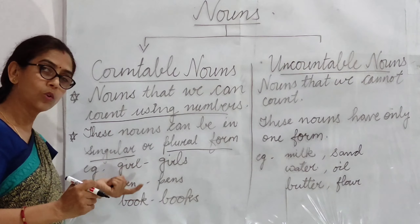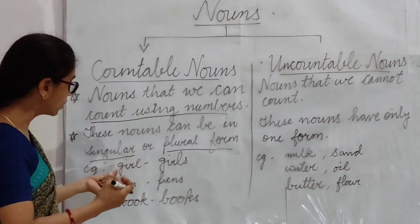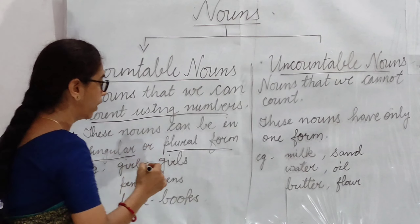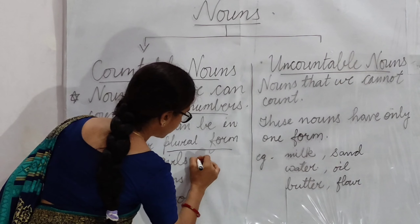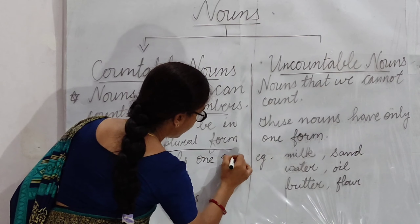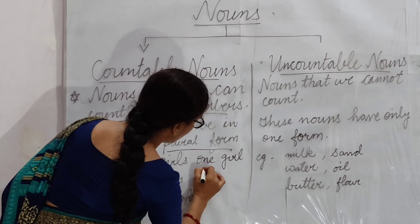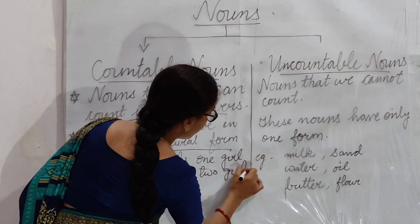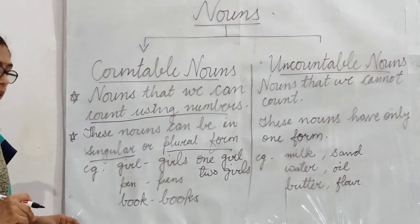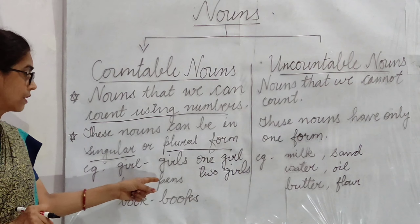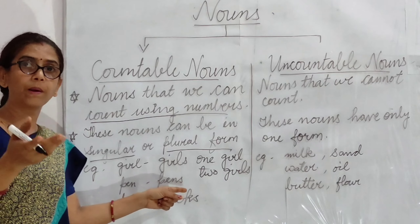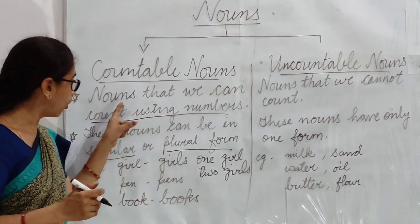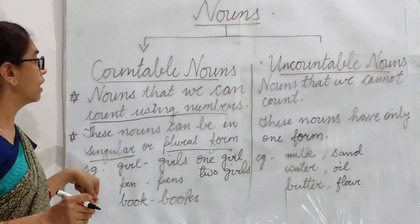And we can use a number also with these nouns — one girl, two girls. Ham one girl bhi bol saktay hain, ham two girls bhi bol saktay hain. We can use numbers with these nouns. In the same way, pen — we can say one pen, two pens, three pens. So all these are countable nouns.